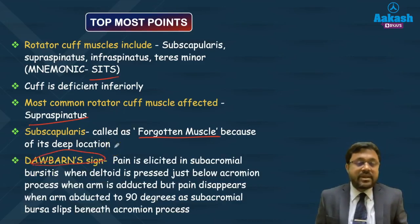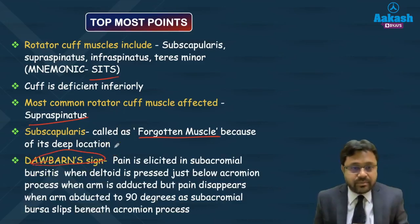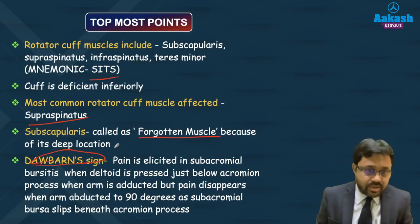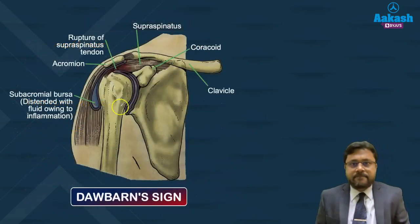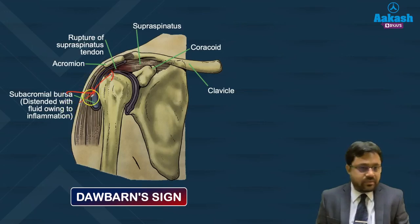Regarding Dawbarn's sign: pain is elicited when you press upon the deltoid just beneath the acromion process when the arm is adducted. When you abduct the arm, the bursa disappears under the acromion process and pain is no longer elicited at that point.